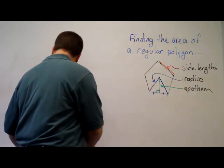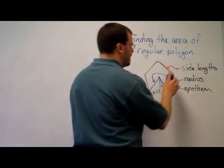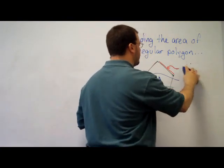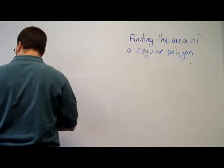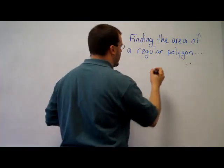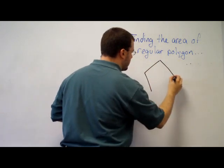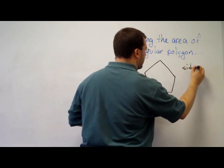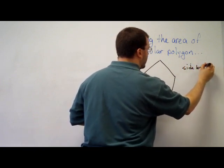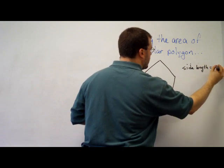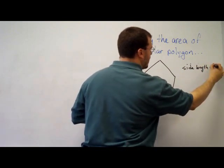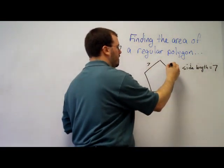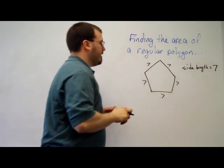So depending on what's given, whether we're told a side length, a radius, or an apothem, we still need to use the angle measures associated with the regular polygon. Let's start with a problem where what's given is the side length of this regular pentagon equals seven. So all the sides, since it's a regular polygon, are seven.